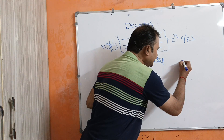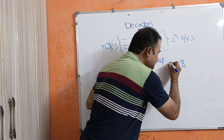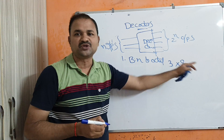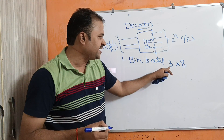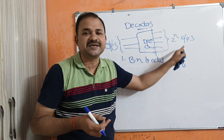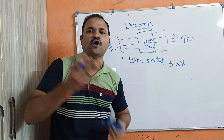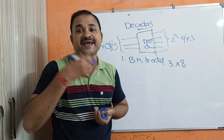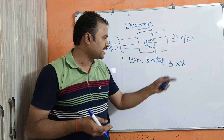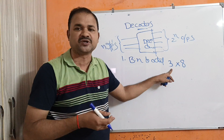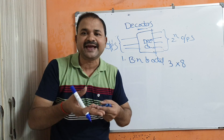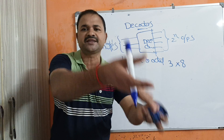Octal means 8, so here we must require 3 inputs — the binary number contains 3 inputs — making it a 3-by-8 decoder: 3 inputs and 2 power 3 equals 8 outputs. Here maximum we can get 2 power n outputs, but we may get less than 2 power n outputs also. So if we have 3 inputs, maximum we can get 8 outputs, but we may get 5, 6, or 3 outputs as well.